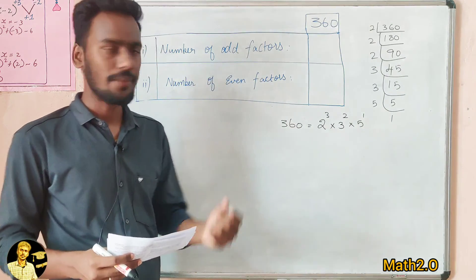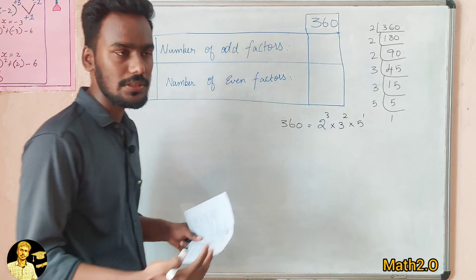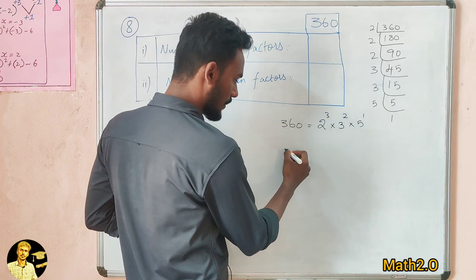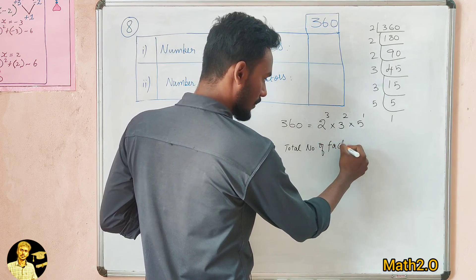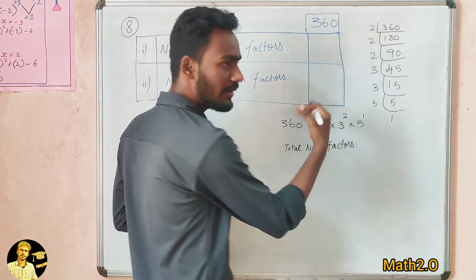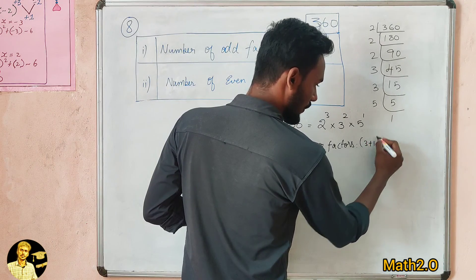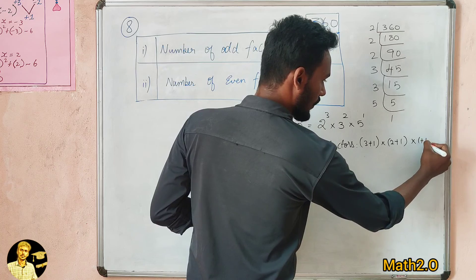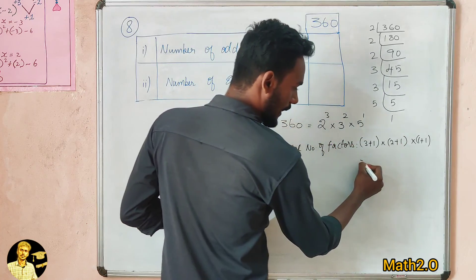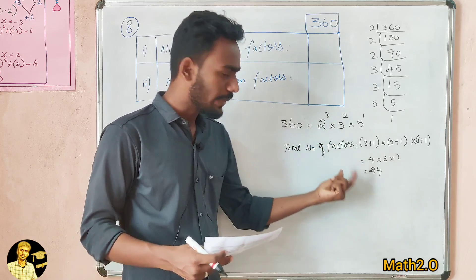We need to find the odd number of factors. How do we find out the number of factors? We take the powers in the prime factorization, add 1 to each, and multiply them together. So, 3 plus 1 into 2 plus 1 into 1 plus 1 gives 4 into 3 into 2, which equals 24. The total number of factors for 360 is 24.